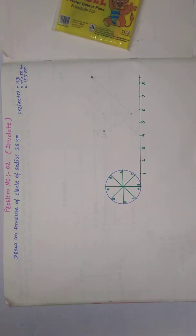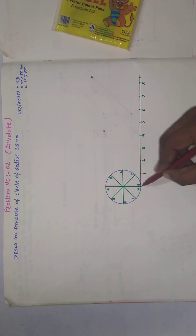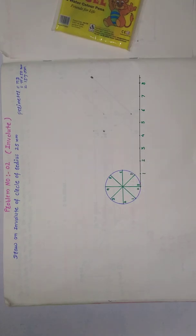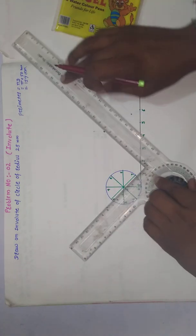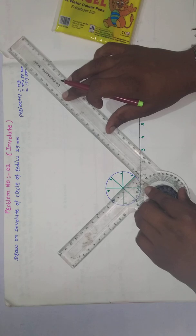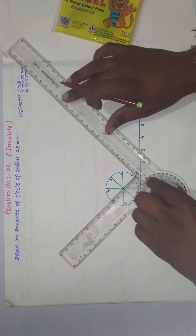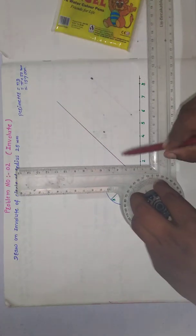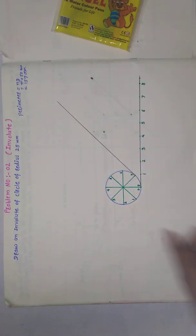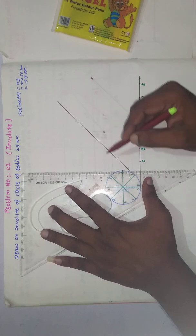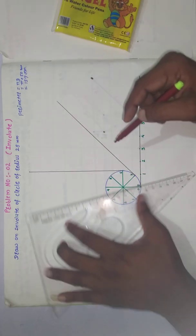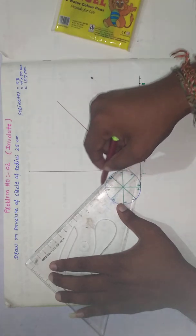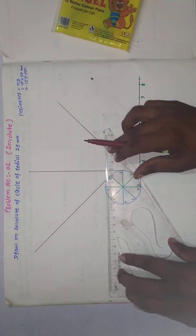From every point — one, two, three, four, five, six, seven, and eight — we have to draw a tangent to the circle. For drawing these tangent lines you can use a scale, set square, or drafter. Draw tangents from every point.